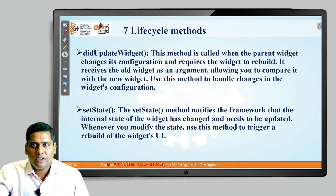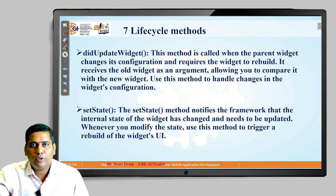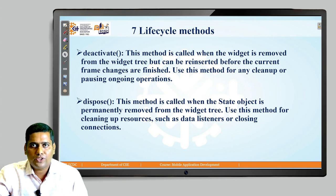The didUpdateWidget method is called when the parent widget changes its configuration and requires the widget to rebuild. It receives the old widget as an argument and allows you to compare it with the new widget. The setState method is also important — it notifies the framework that the internal state of the widget has changed and needs to be updated. Whenever you modify the state, use setState to trigger a rebuild of the widget UI. The deactivate method is called when the widget is removed from the widget tree but can be reinserted; use it for any cleanup or pausing of ongoing operations.